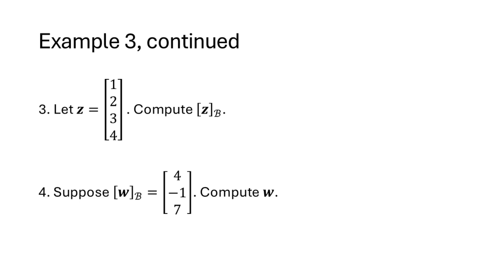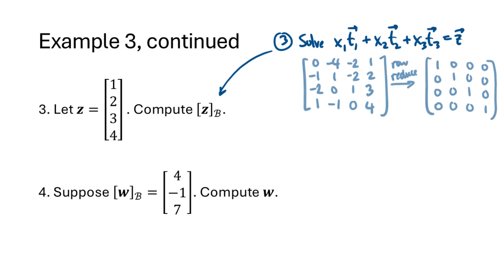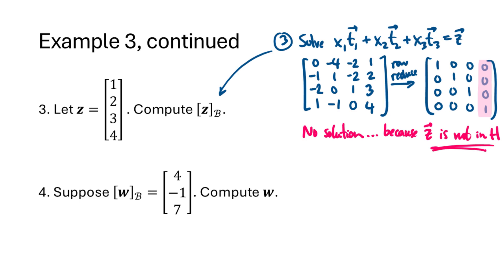Continuing with the same example, if z is the vector (1, 2, 3, 4), let's compute the coordinates of z relative to basis B. We set up the vector equation x1*t1 plus x2*t2 plus x3*t3 equals z and row reduce the augmented matrix, but this time we get a pivot in the last column, telling us this equation has no solution. This means z is not in H — z cannot be written as a linear combination of the t vectors because z isn't in the subspace. If this happens, first double-check your work, but then realize the vector is simply not in your subspace.